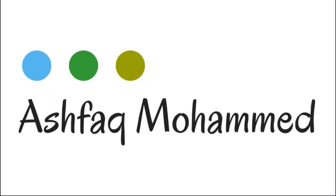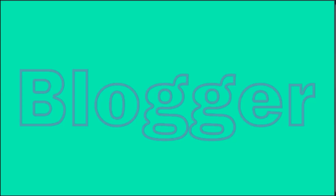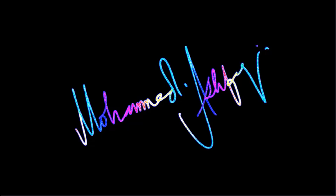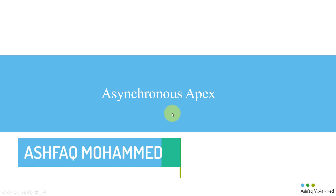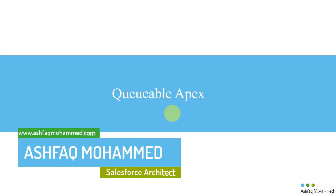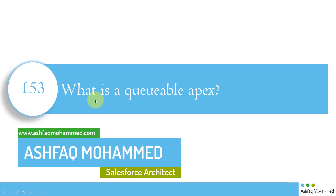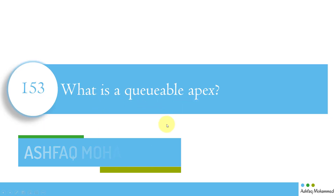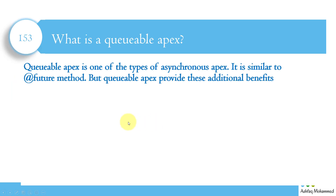Queueable Apex comes under asynchronous Apex. Basically, Queueable Apex is one of the types of asynchronous Apex. I would say this is a better version of the Future method — it is similar to a Future method but a better version of it.